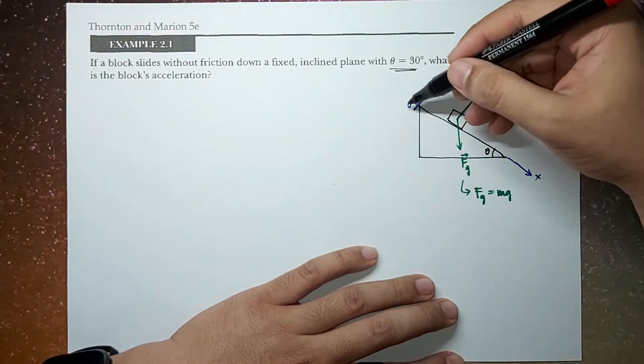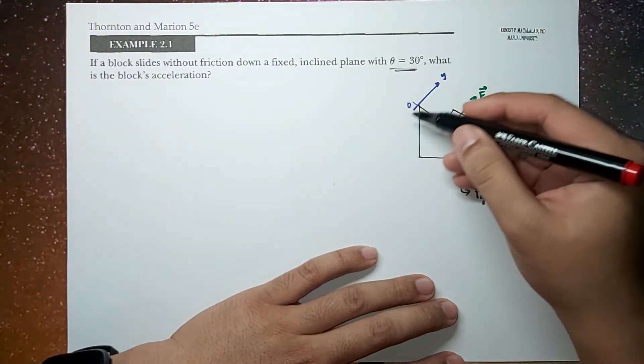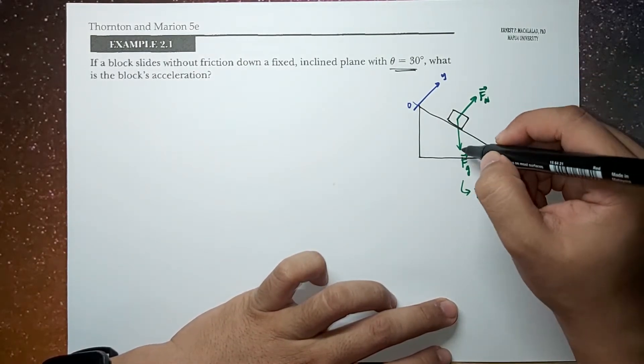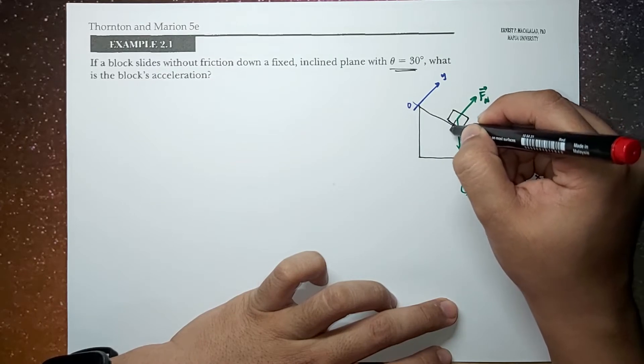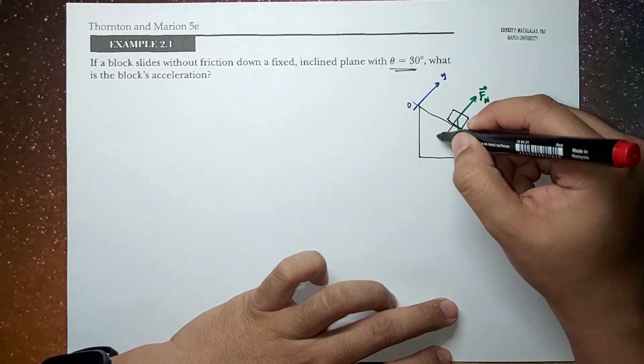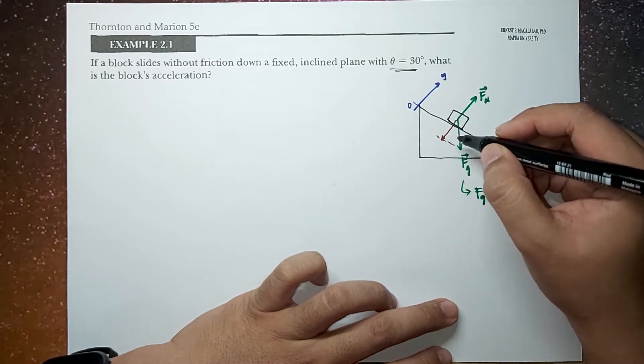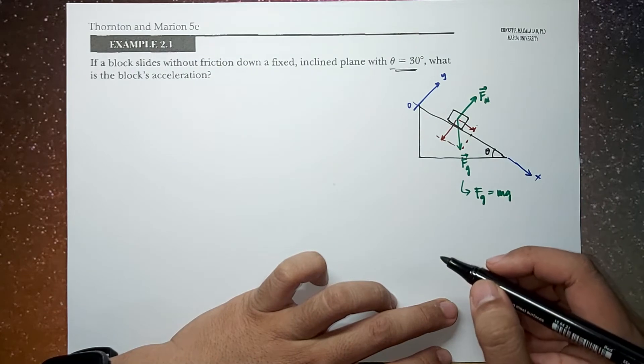So if this is your x and y coordinate axis, based on this x and y coordinate axis, we can identify the components of your gravitational force. Namely, this will be the y component of your gravitational force. And this will be your x component of your gravitational force.